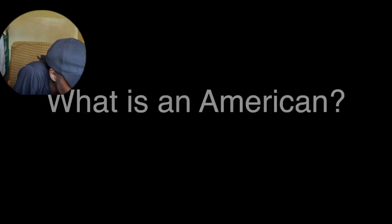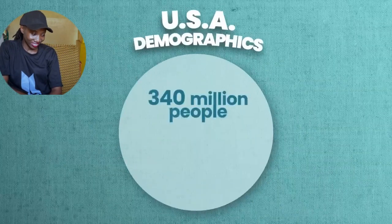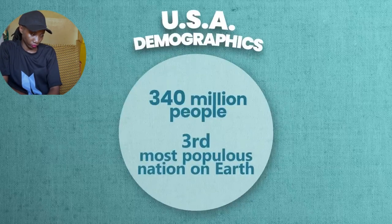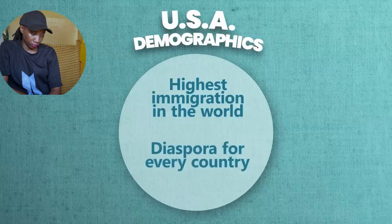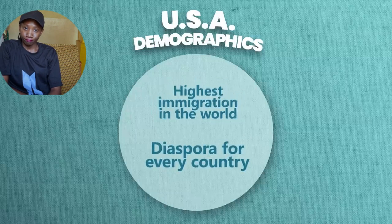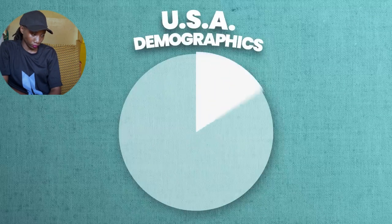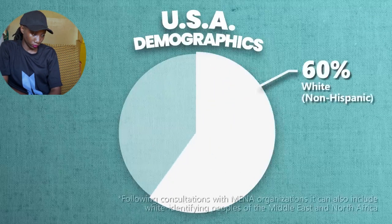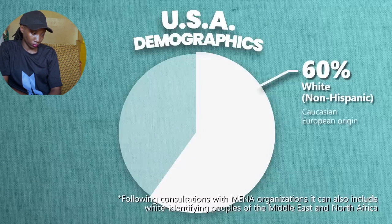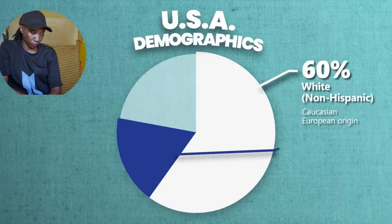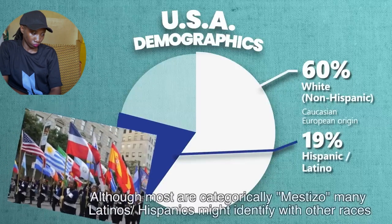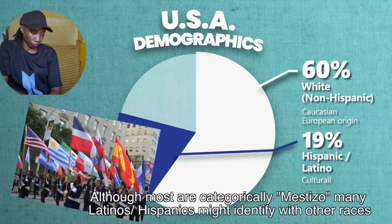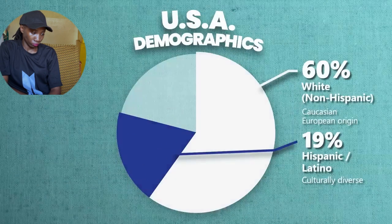The United States has about 340 million people and is the third most populous nation on earth after China and India. It has the highest immigration of any country in the world, and every nation on earth has some kind of community or diaspora represented within it. The first and largest demographic is the white non-Hispanic group at about 60%, mostly with European origins. The second largest community is Hispanic and Latino Americans making up about 19% of the population.